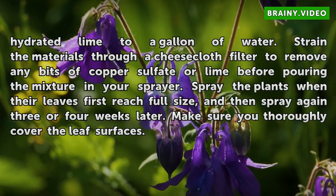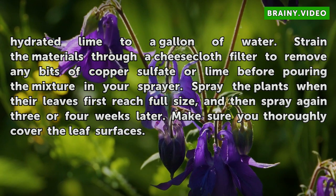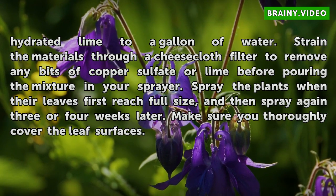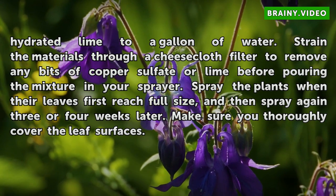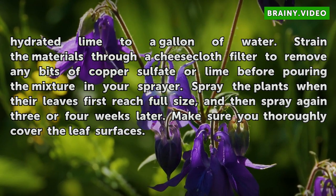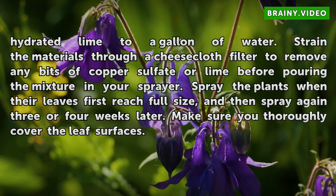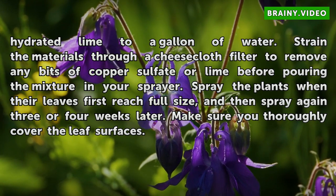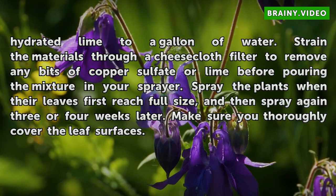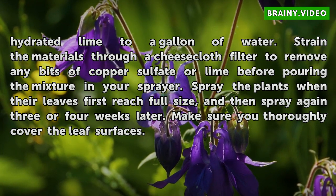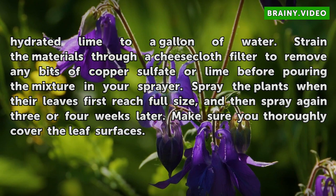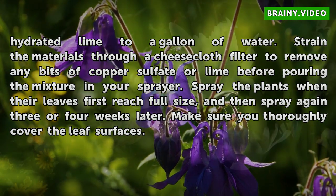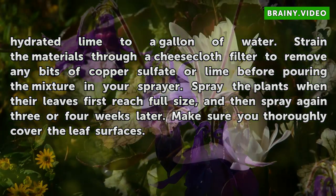Strain the materials through a cheesecloth filter to remove any bits of copper sulfate or lime before pouring the mixture into your sprayer. Spray the plants when their leaves first reach full size, and then spray again 3 or 4 weeks later. Make sure you thoroughly cover the leaf surfaces.